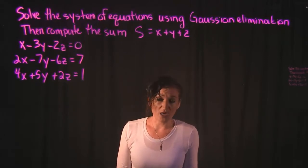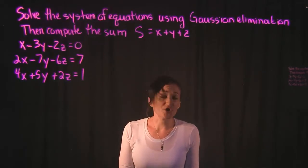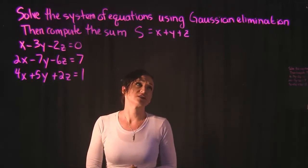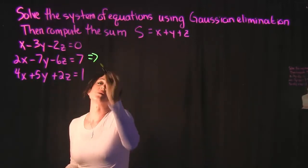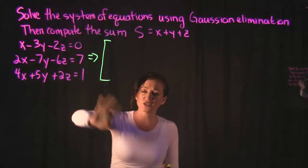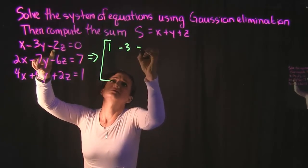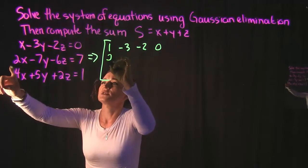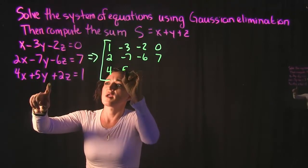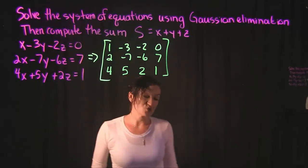This is somewhat a long process so I'm going to shorthand this a little bit, going through all the row calculations needed to solve this problem. The first thing we need to do is get this set up in proper form — we need to create our augmented matrix. We use the coefficients of all our values: first equation gives 1, -3, -2, 0; second equation 2, -7, -6, 7; last equation 4, 5, 2, 1. This is our matrix and we need to solve it.